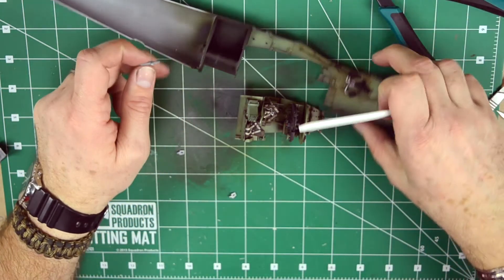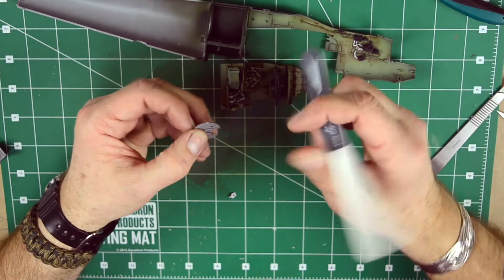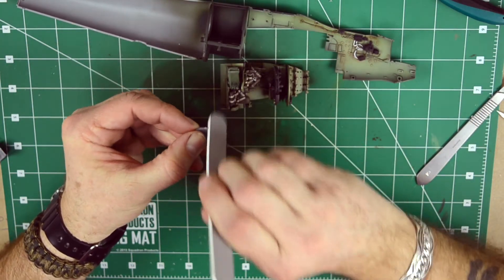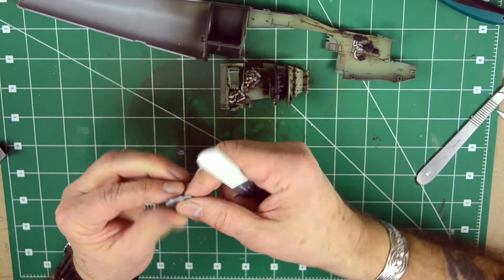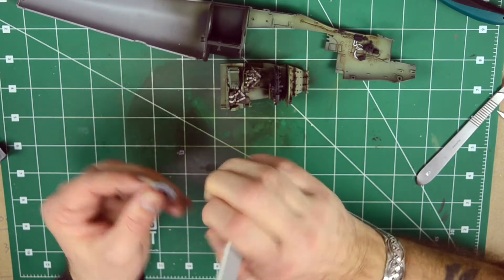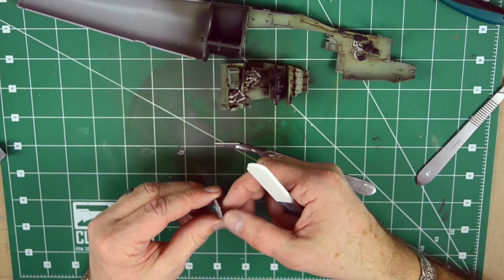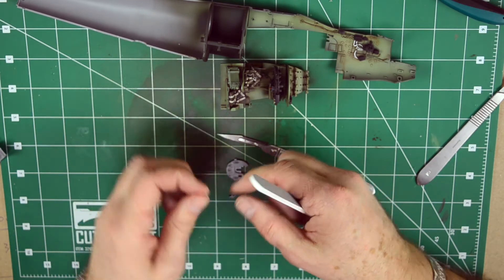The good thing about the Tamiya kits is that whenever you cut the pieces off the sprue, there is not a lot of flash you need to take care of. You just can easily nip them on the sprue, clean them up a little bit with the X-Acto knife and then just sand it a little bit. There is not much cleanup on those parts.